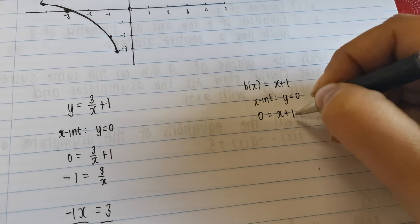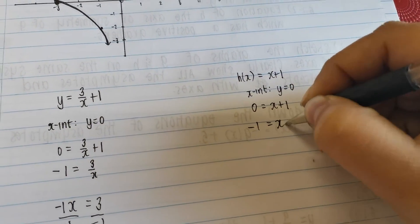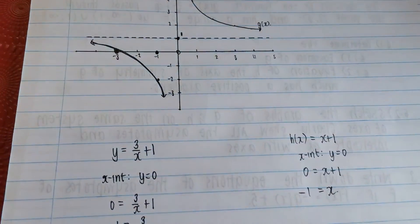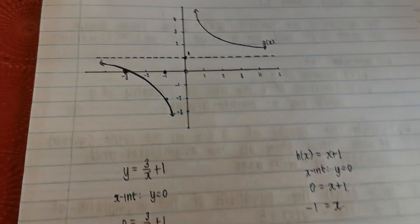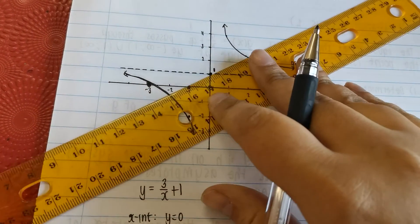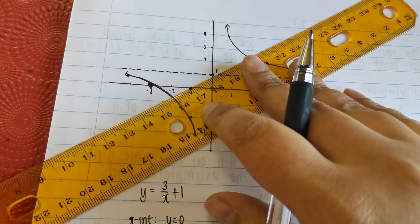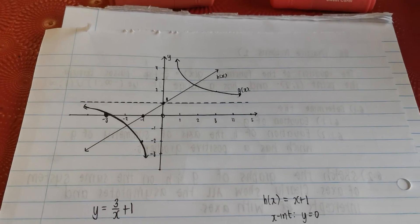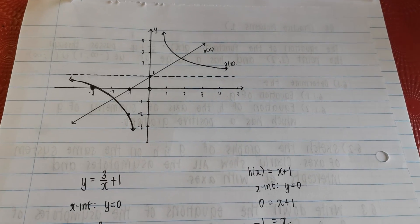0 is equal to x plus 1. Take this over. Negative 1 is x. So it's going to be passing through here and here. You take your ruler. You put your ruler on there and you draw a line passing through. Let me do that. And there we go. That's h(x) done.